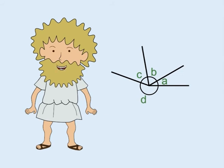If you know three of the angles, you can work out the other one, because A plus B plus C plus D equals 360 degrees.